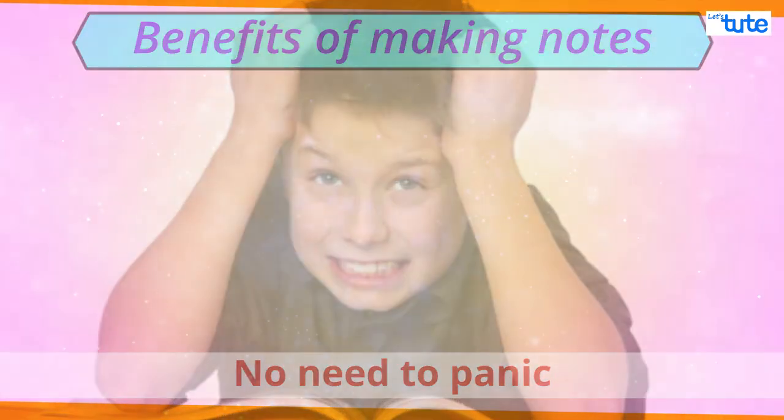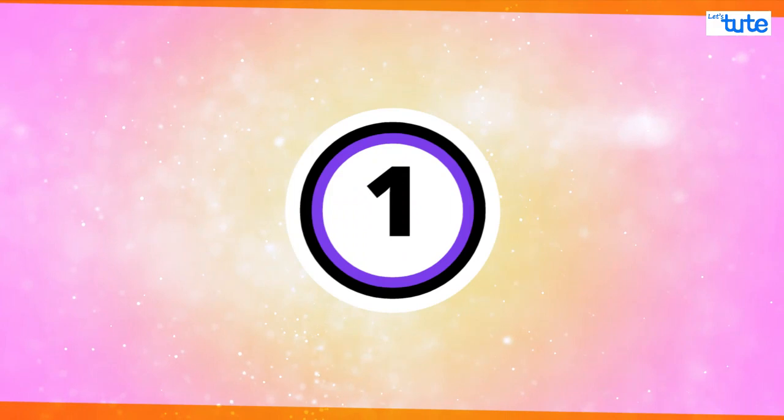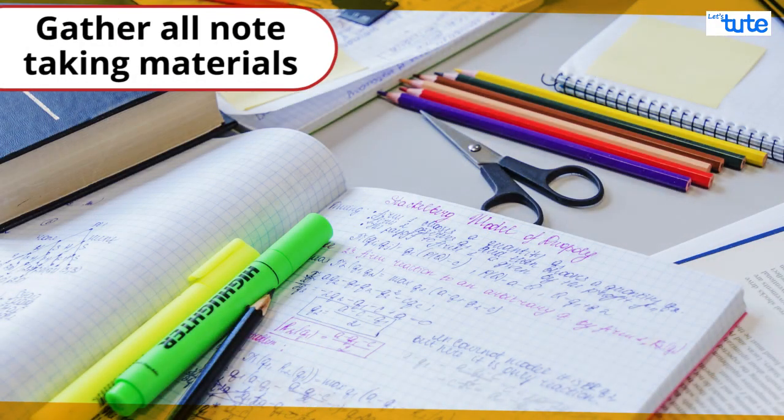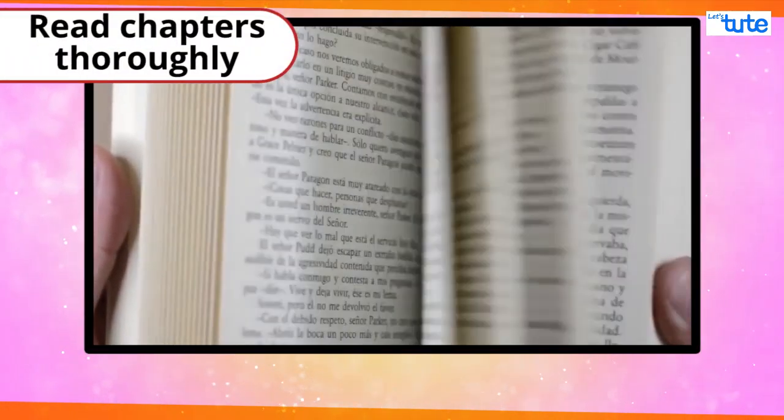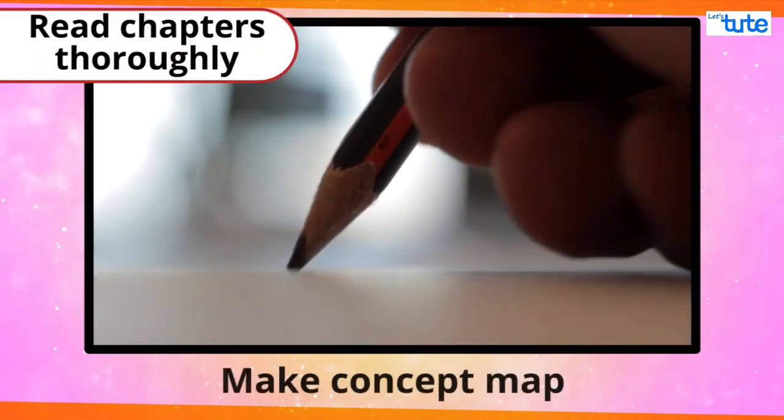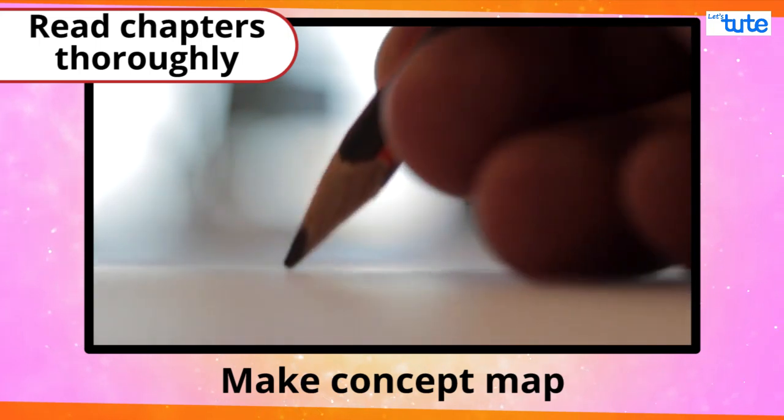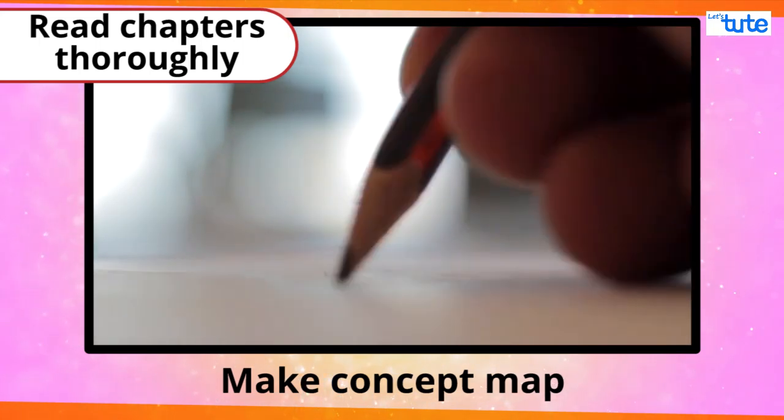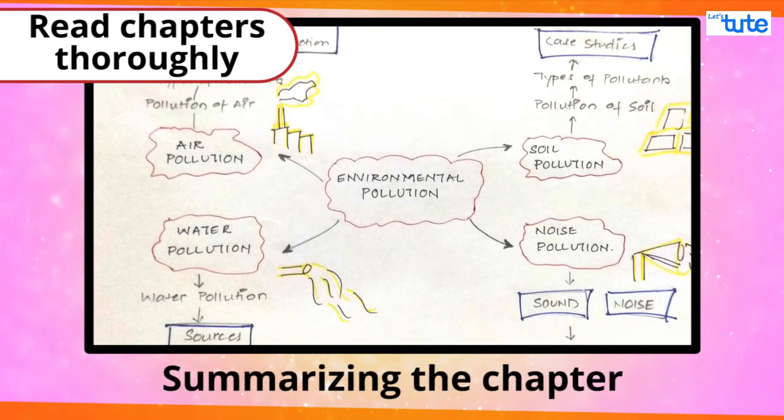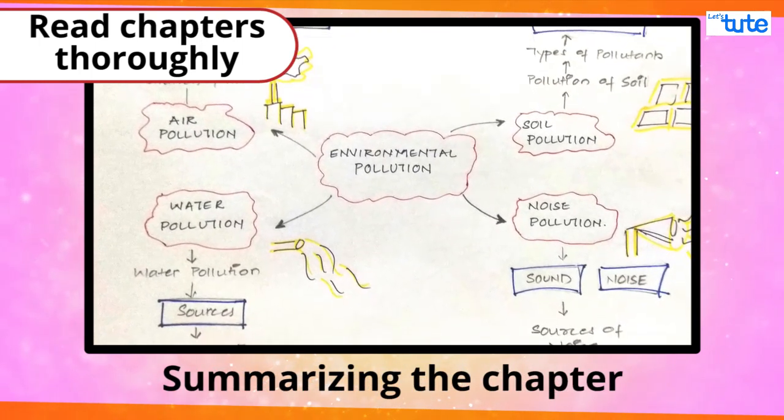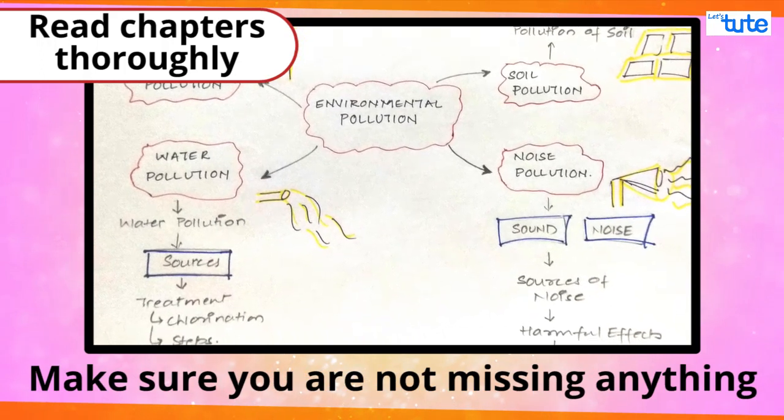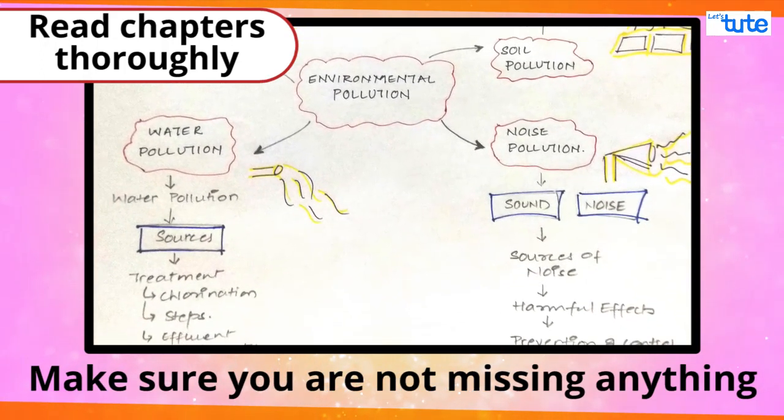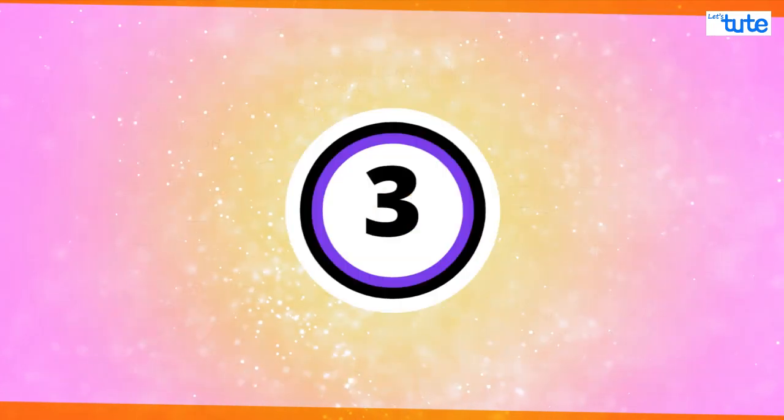So let's begin. The first thing which we need to do is gather all the note-taking materials. I would then suggest you read the chapters thoroughly and try making a concept map of the topics or subtopics involved in that chapter. This is like summarizing the chapter and finding connecting links between the topics. It will also help you make sure that you're not missing out any topic while studying.